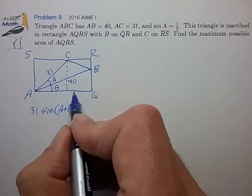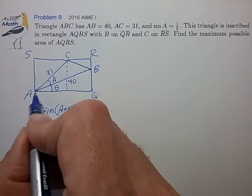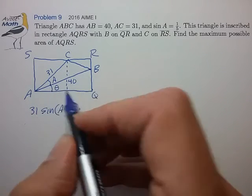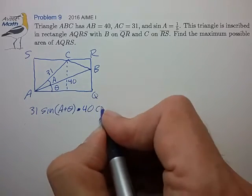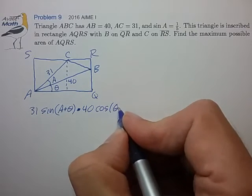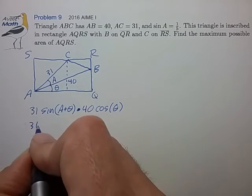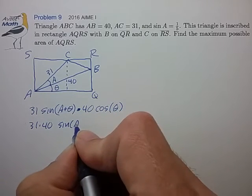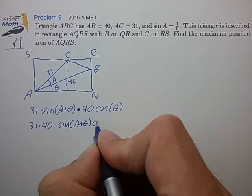And the width of the rectangle is given by 40 times the cosine of theta. So that's 31 times 40 sine A plus theta cosine theta.